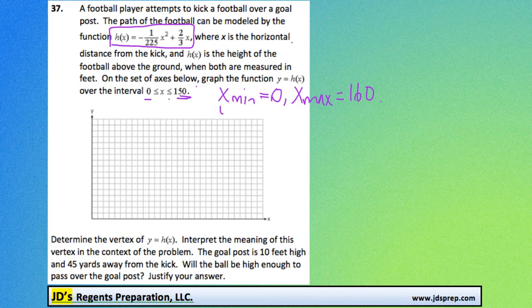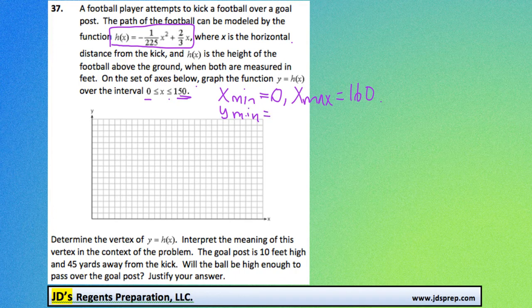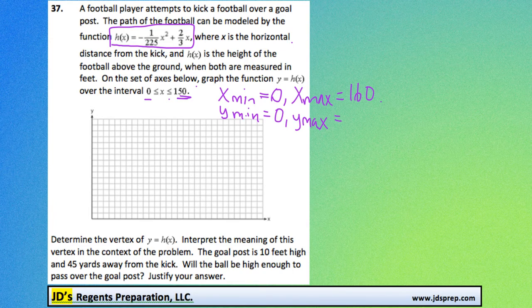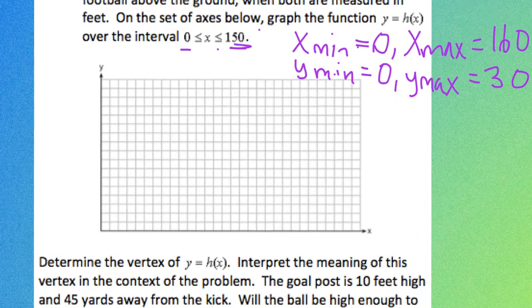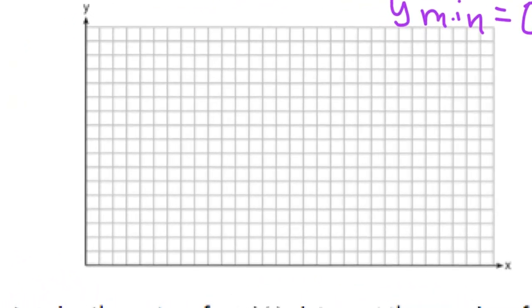And then for our y minimum, because that represents the vertical height, we would start at 0. And then for the maximum, you might need to play around with your settings a little bit to figure it out, but I found that a y maximum of 30 works pretty well to be able to see everything that's going on. So let's zoom in here and graph this.